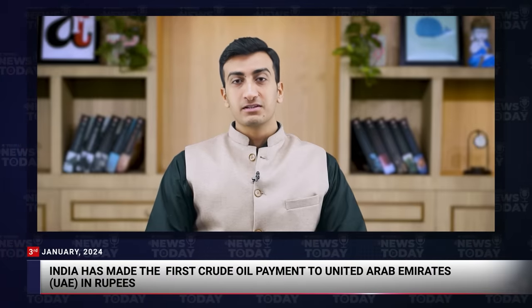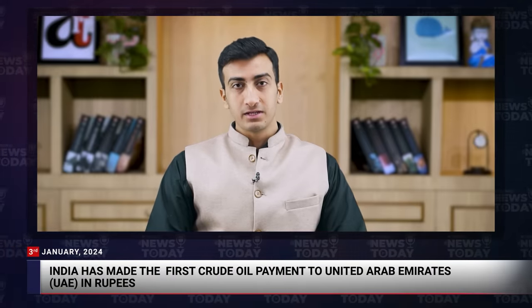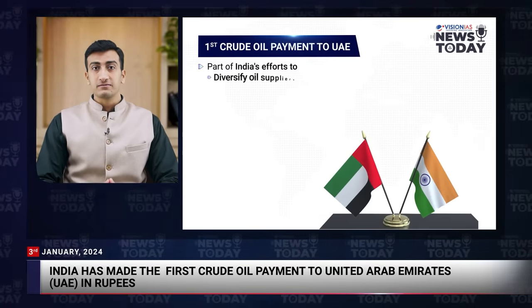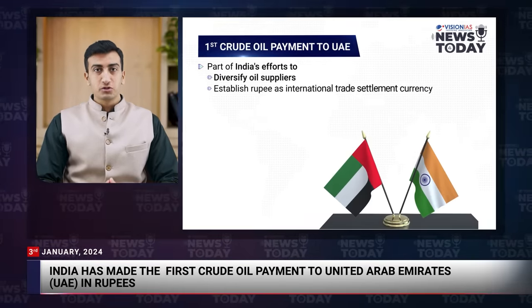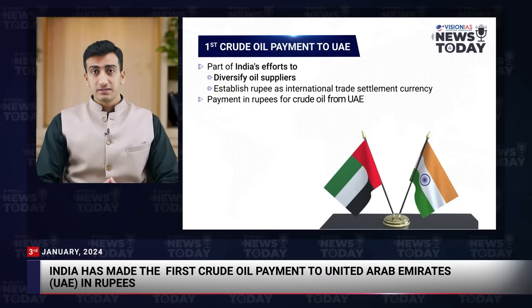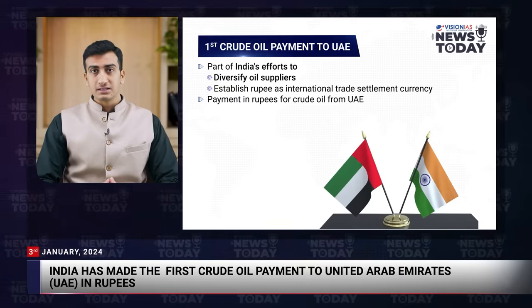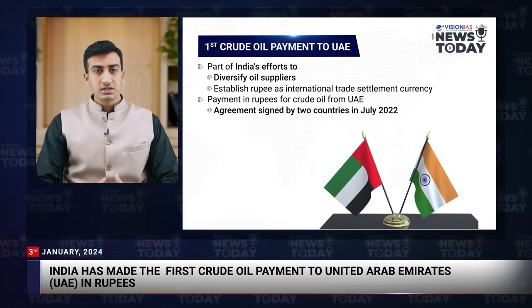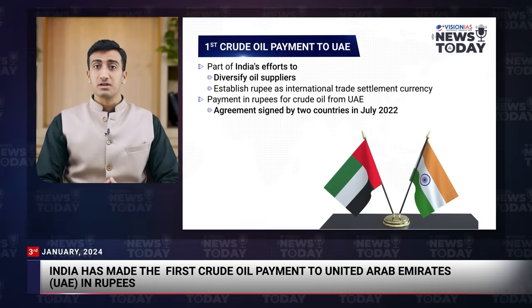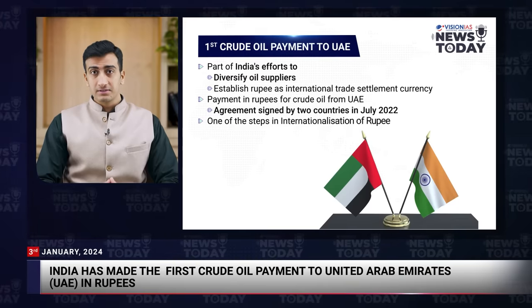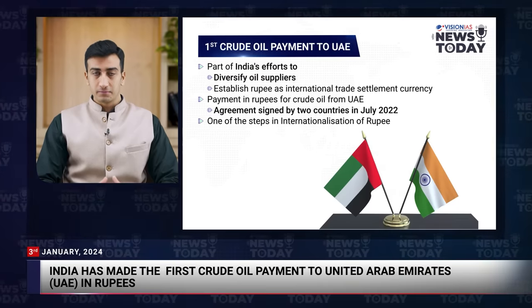Starting with the first news: India has made the first crude oil payment to the United Arab Emirates in rupees. It is part of India's broader efforts to diversify oil suppliers and establish the rupee as a viable international trade settlement currency. Payment in rupees for crude oil from UAE is as per an agreement signed between the two countries in July 2022, which aims to boost India's efforts to cut transaction costs by eliminating dollar conversions. It is one of the steps in the internationalization of the rupee.